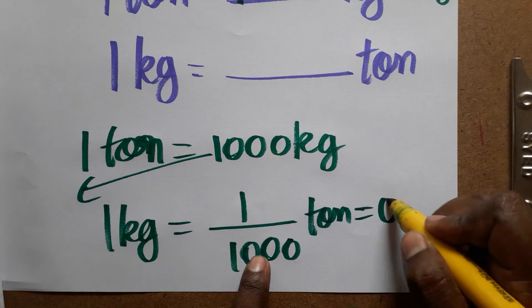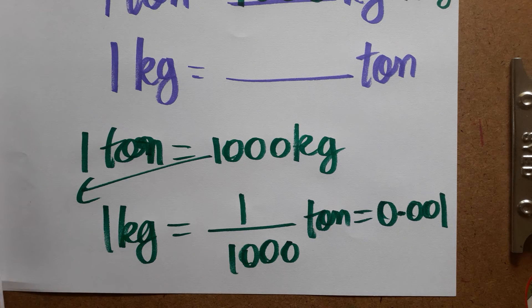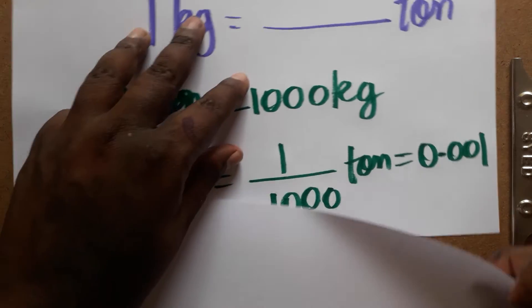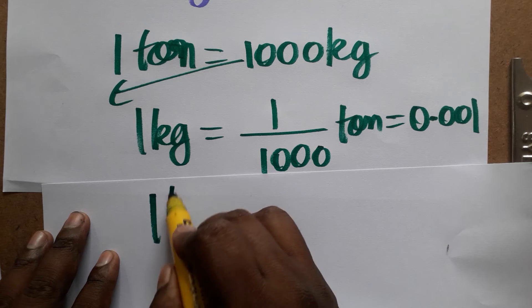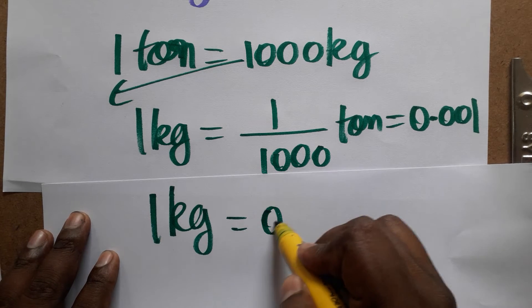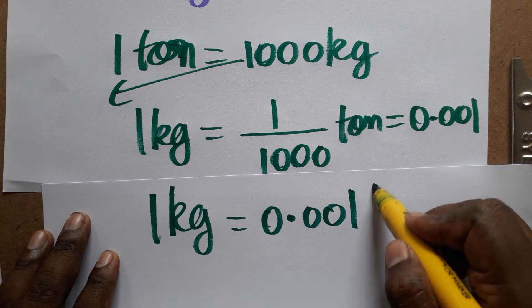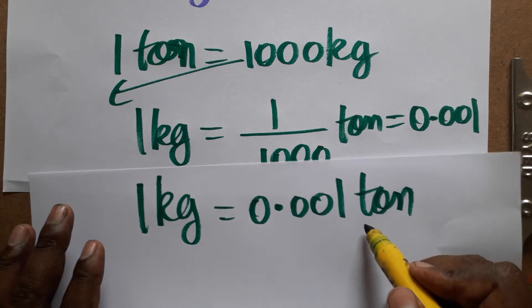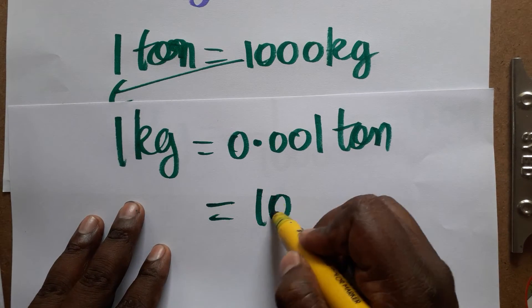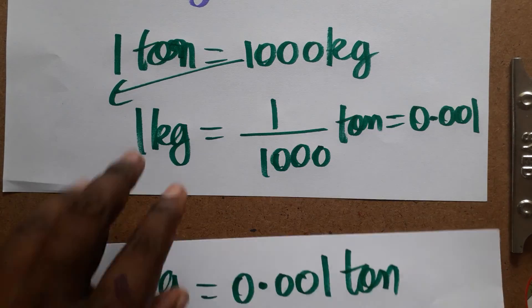1 divided by 1000 we can write as 0.001 ton. The same thing I will do on a different paper. See here, 1 kg equals 0.001 ton. So 0.001 we can write as 10 power minus 3.